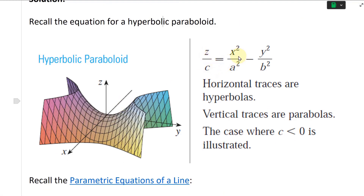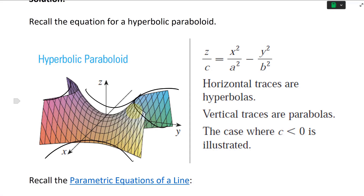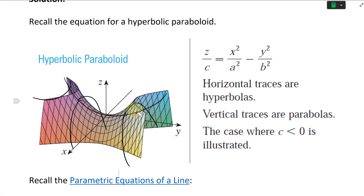So you have z over c equals x squared over a squared minus y squared over b squared. The horizontal traces are hyperbolas and the vertical traces are parabolas. The horizontal ones are hyperbolas — like that — and then the vertical ones, if you cut it anywhere, it's going to be a parabola on either vertical axis.